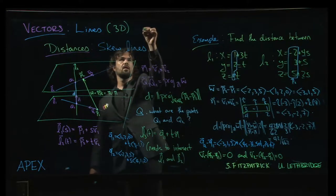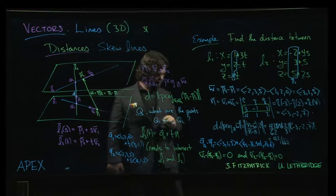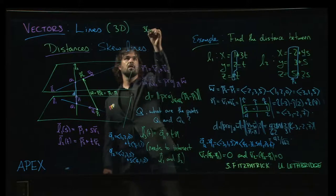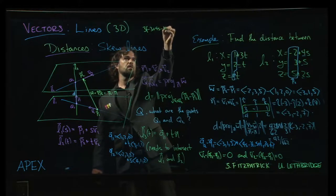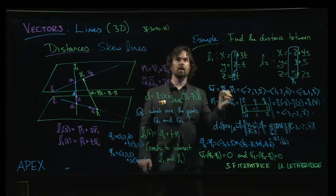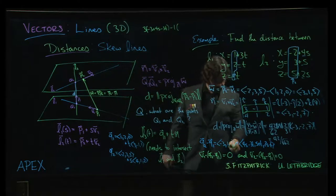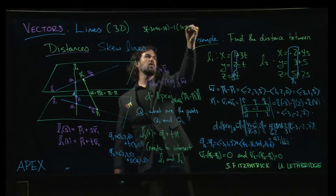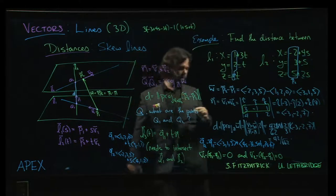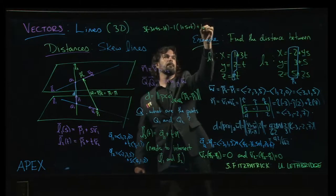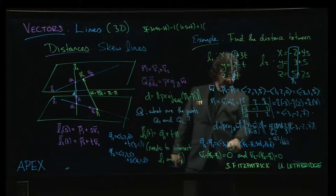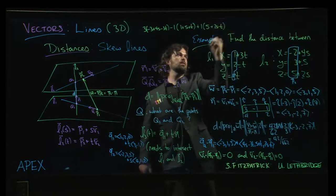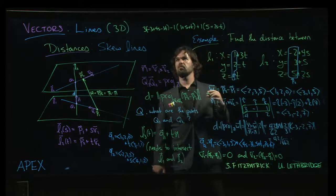So we'd have to have 3 times minus 3 plus 4s minus 3t, and then minus 1 times 1 plus s plus t, and then 1 times 5 plus 2s minus t.